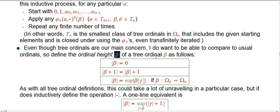I'm just going to use absolute value bars for that. Obviously the height of the tree ordinal zero is just zero, because it doesn't have any fundamental sequence data to throw away anyway. If I know the height of some tree ordinal beta, then the height of its successor is just the ordinary ordinal successor of that — as you'd think.